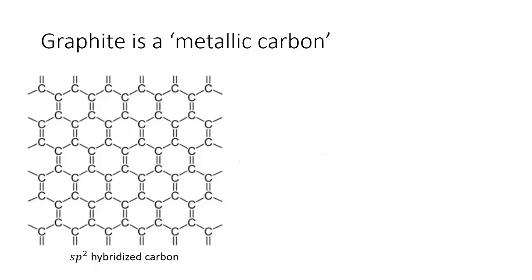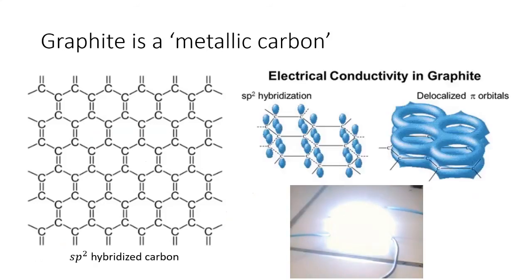If we look closely at the sp2 bonding within the graphite sheet, we see alternating double and single bonds, just like in benzene. This makes graphite resonance stabilized by delocalized electrons in the p orbitals.